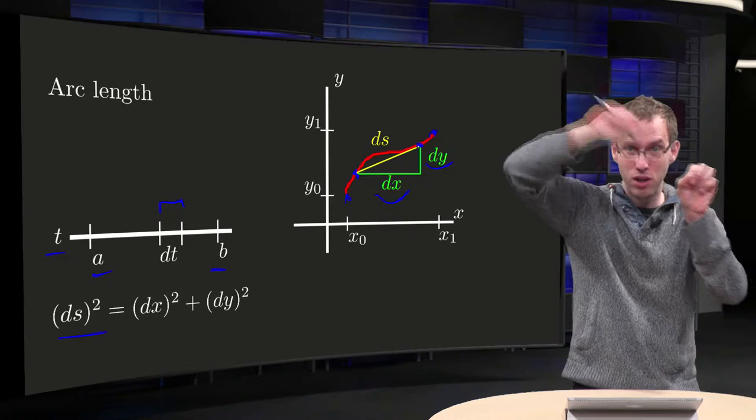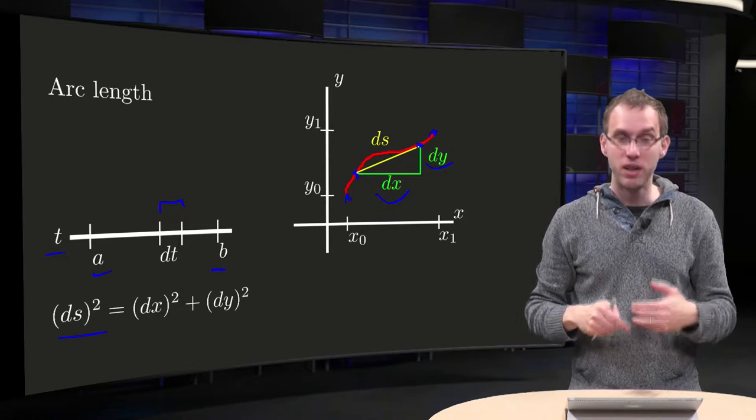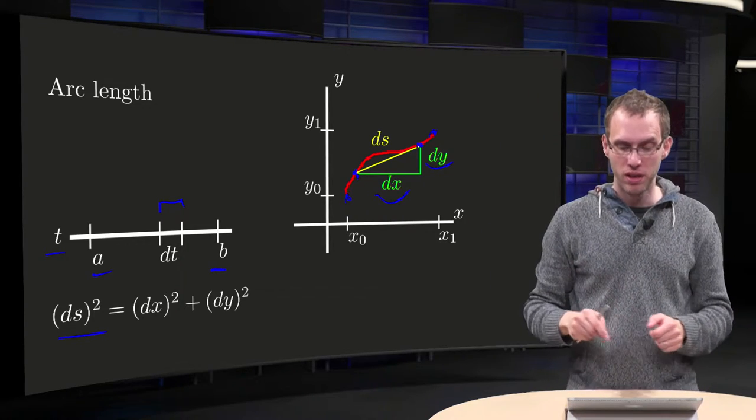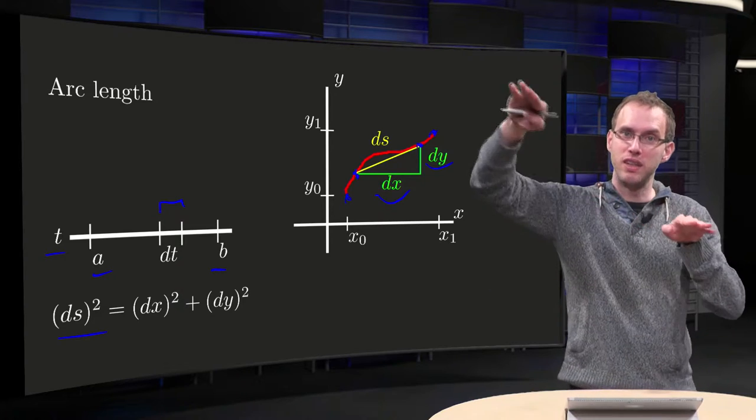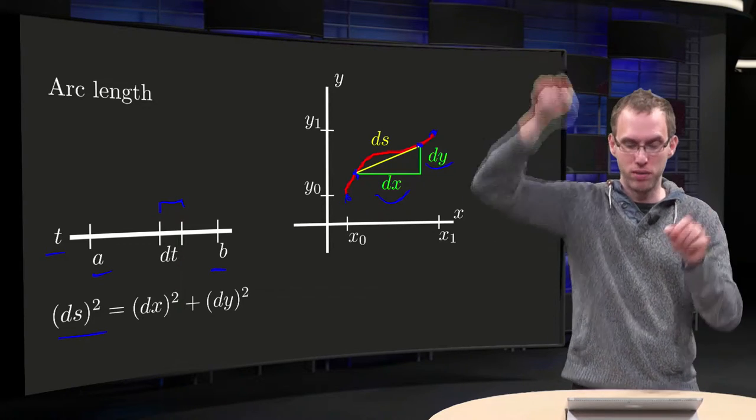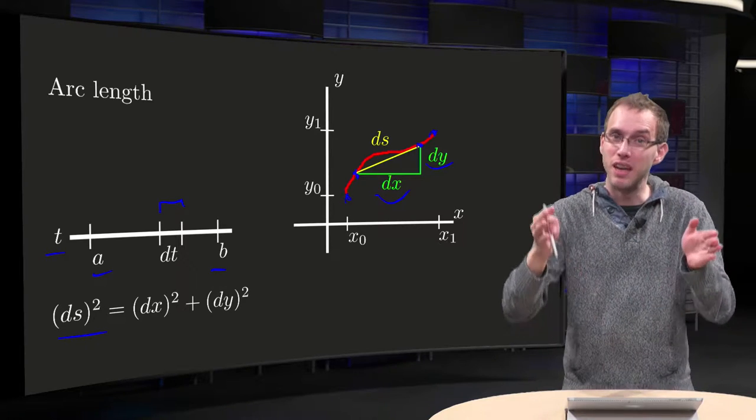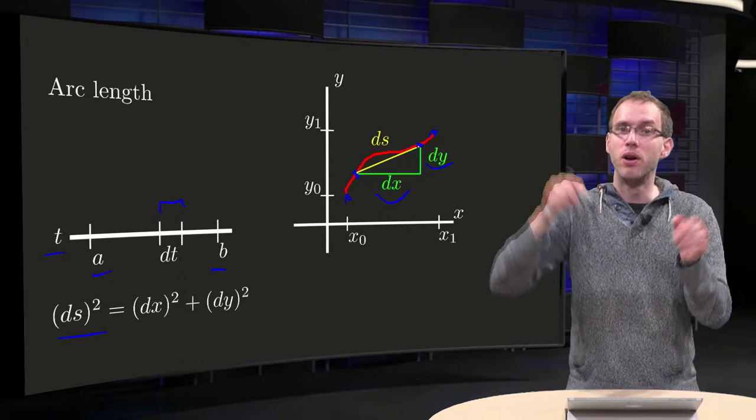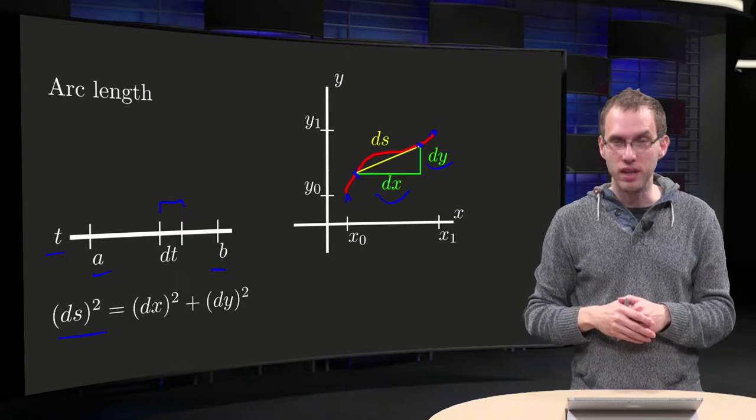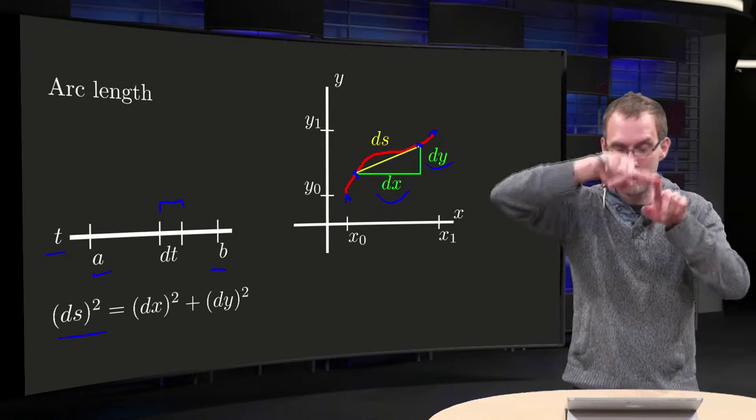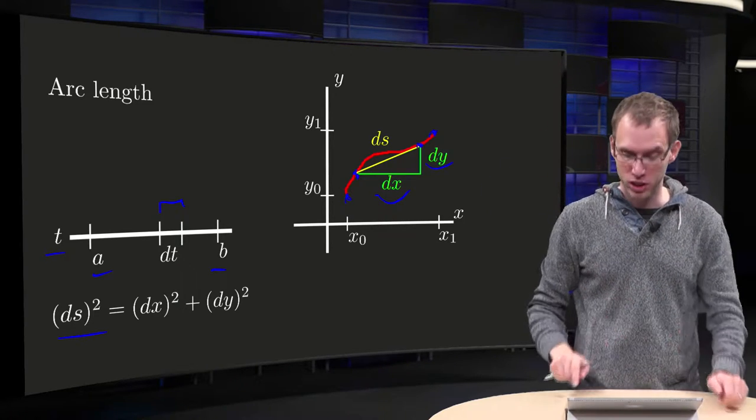So our ds squared, the length along our curve, will be dx squared plus dy squared. And of course you see, the length of the yellow segment is different from the length of the orange segment, so in this case they are not equal. But in the limit, if you take dt to 0, the ds will be exactly the length along the orange segment.